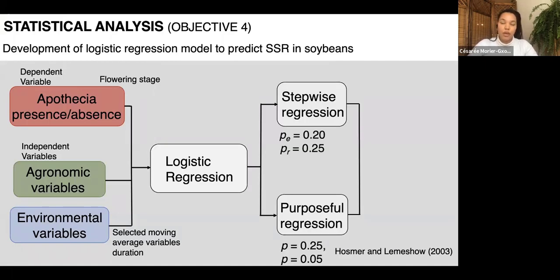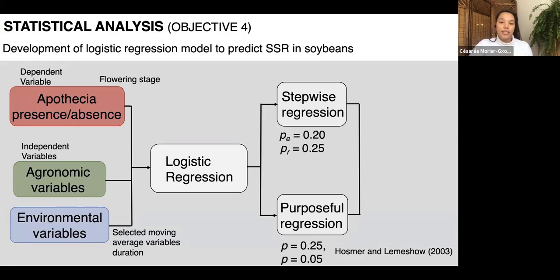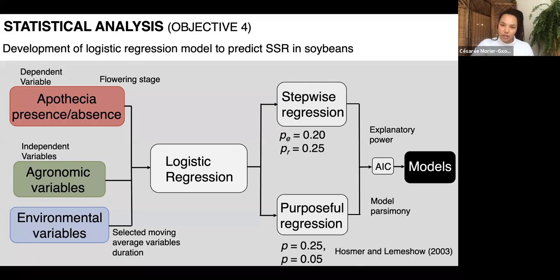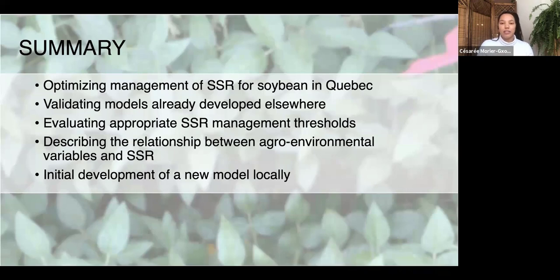I'll fit logistic regression models using two approaches: stepwise regression, which retains only statistically significant independent variables, and purposeful regression, which begins with univariable analysis at a high significance level to include variables with known biological importance. These methods will generate several equations with different sets of predictor variables. To identify which accurately represent the data with high explanatory power without being overly complex, I'll use the Akaike Information Criterion (AIC).